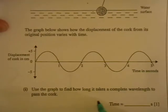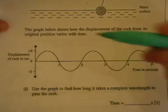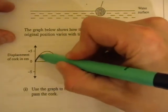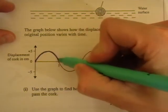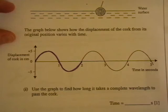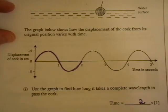Use the graph to find how long it takes a complete wavelength to pass the cork. So you're going to look at the graph here. And I'm just going to draw on it. One complete wavelength is from zero there to two. And so the time taken is two seconds. That's the time.